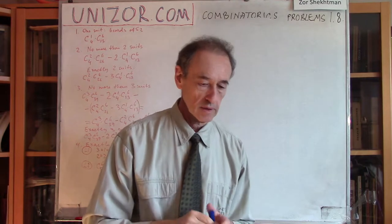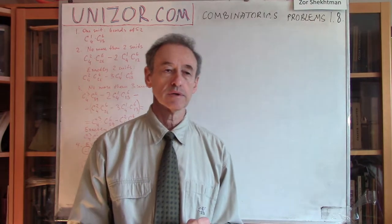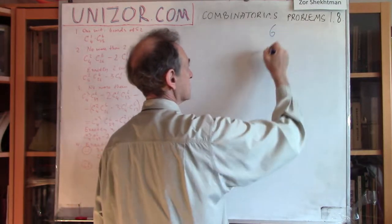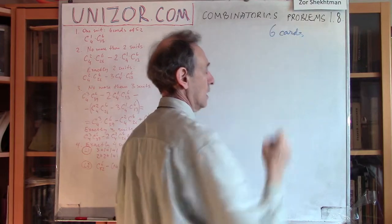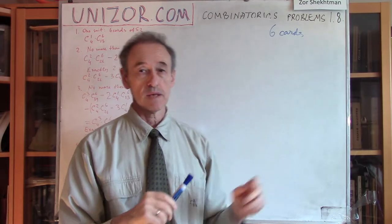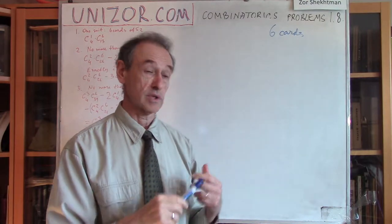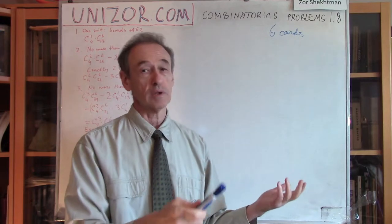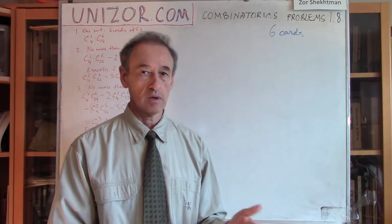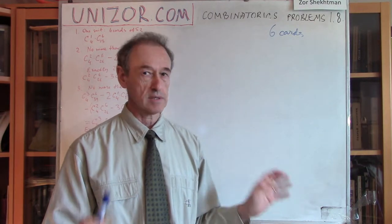Problem number two is very slightly more complex. Exactly the same deck of cards, exactly the same requirement to pick six out of 52. In this case, my requirement is: all of them should belong to no more than two suits. So it can be one suit, or it can be two — for instance, all clubs, or clubs and diamonds, or all hearts, or spades and diamonds. But among these six cards, we should have no more than two different suits.